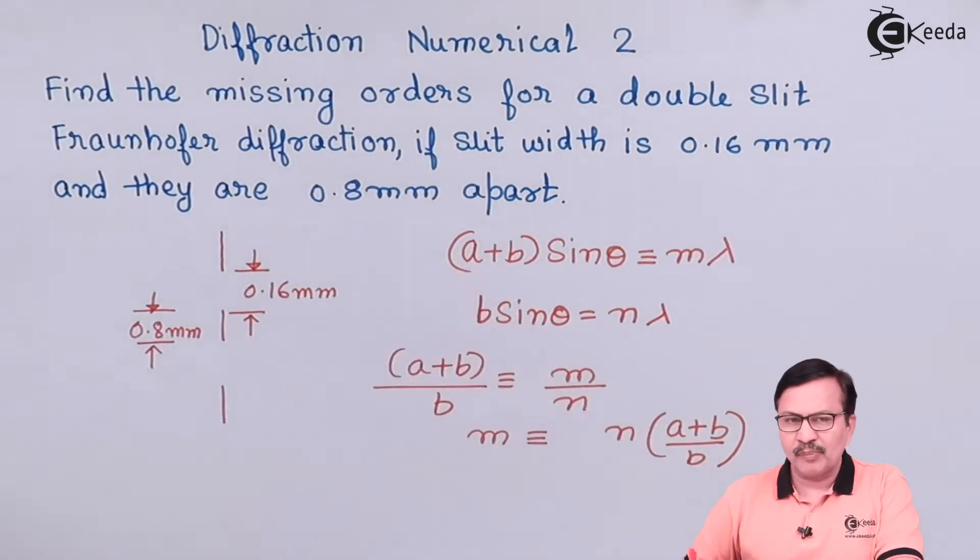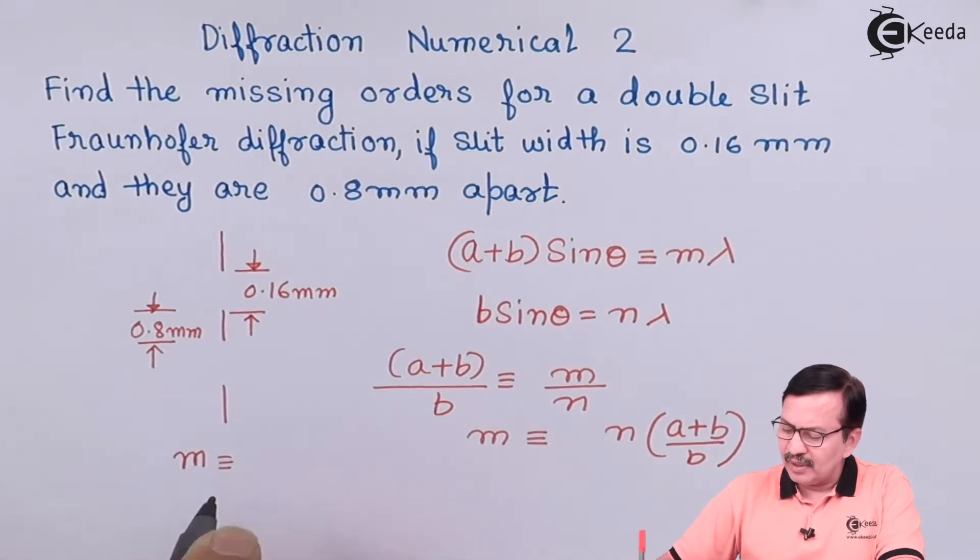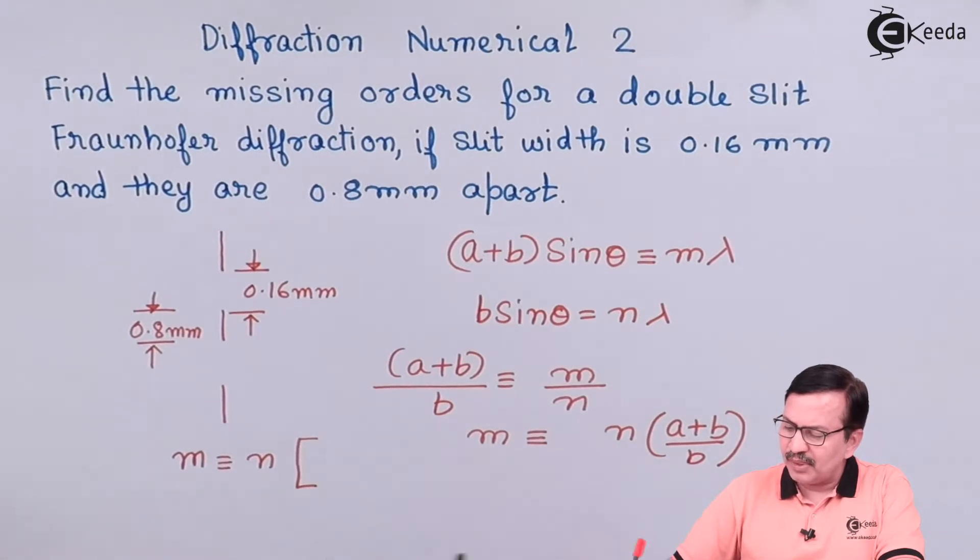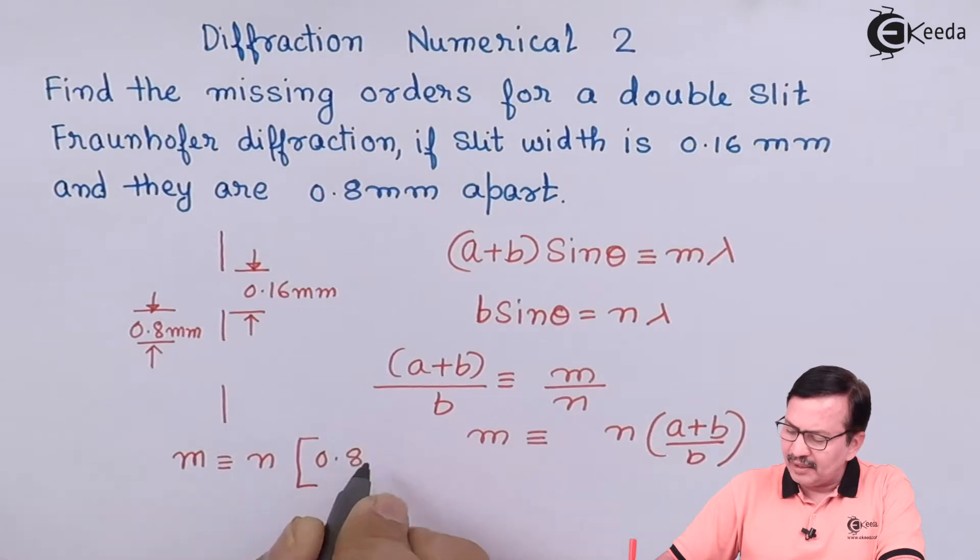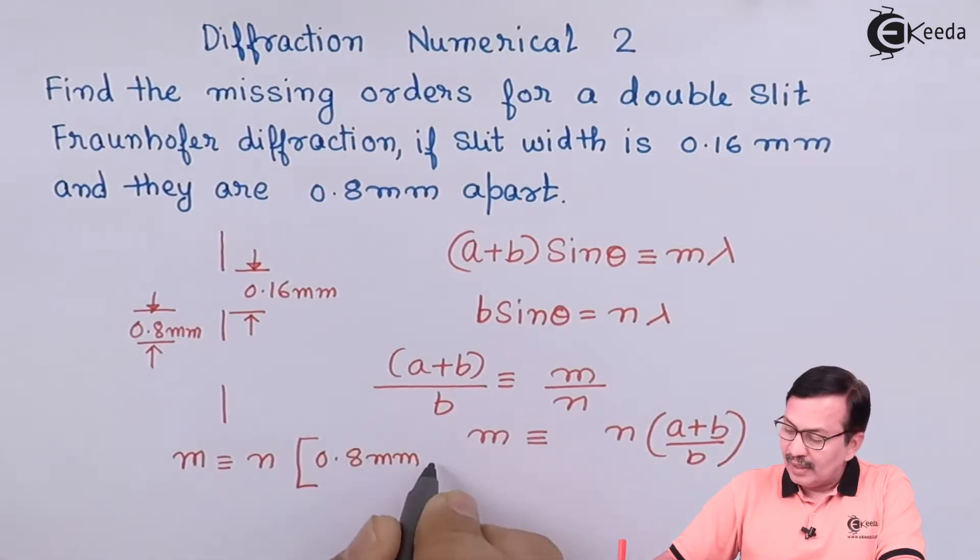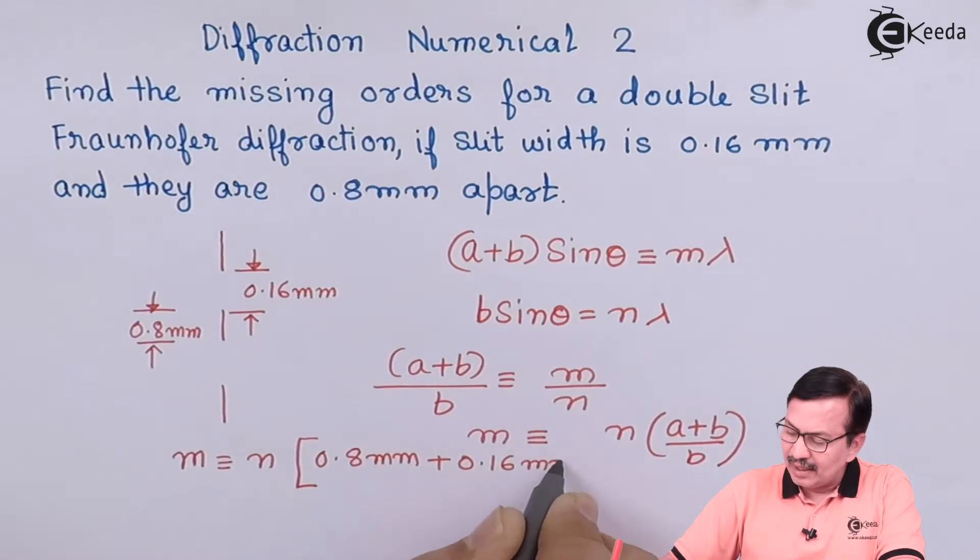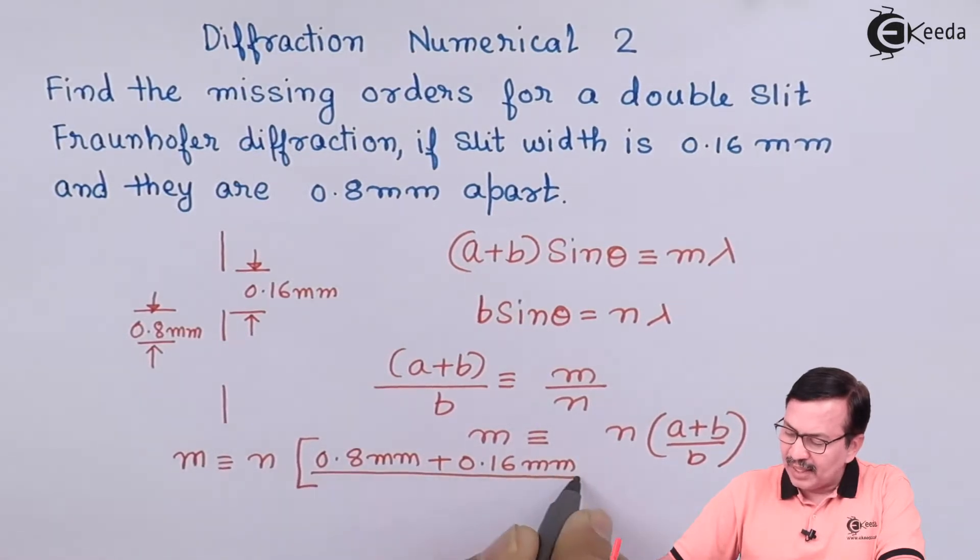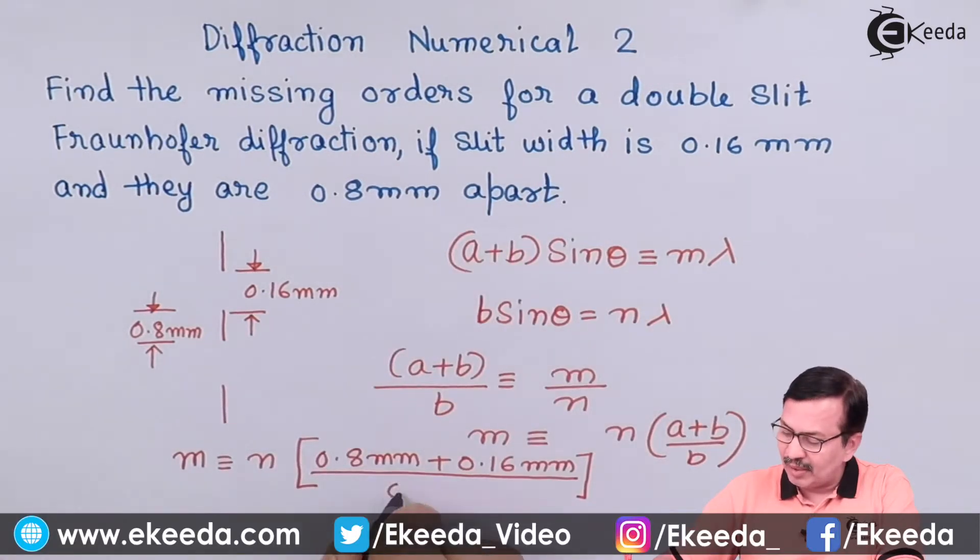Let us now return to our problem and substitute the values. The m is equal to n into a plus b. So your a is 0.8 mm plus 0.16 mm and this entire thing is now going to get divided by 0.16 mm.